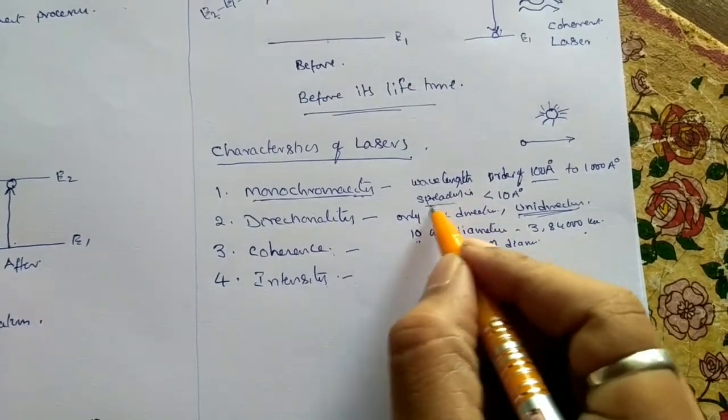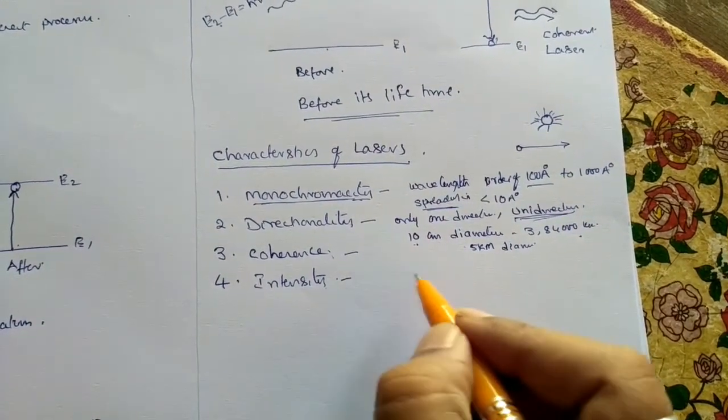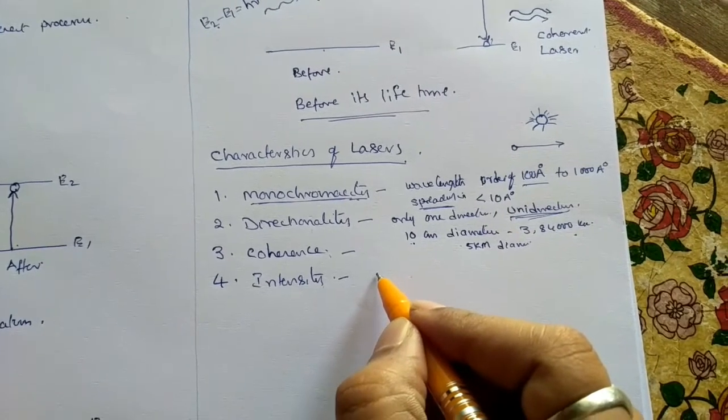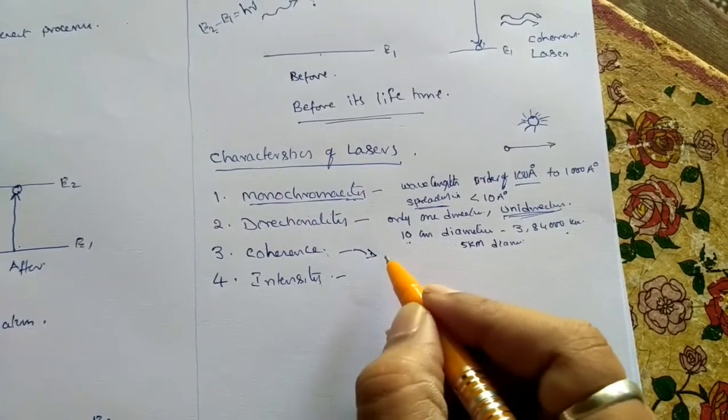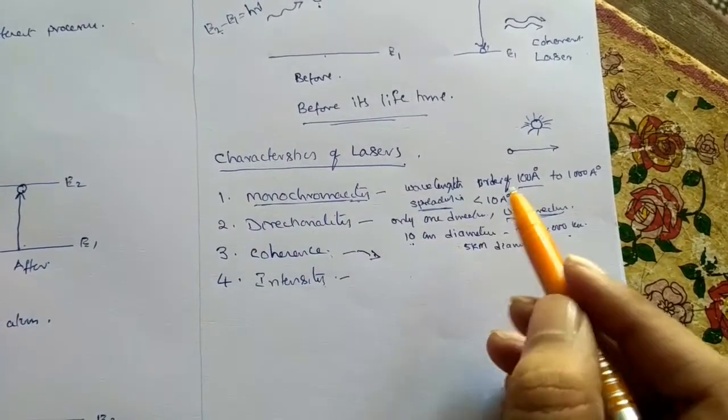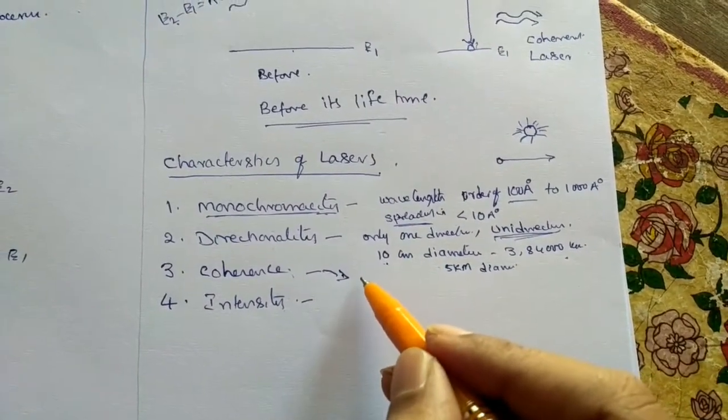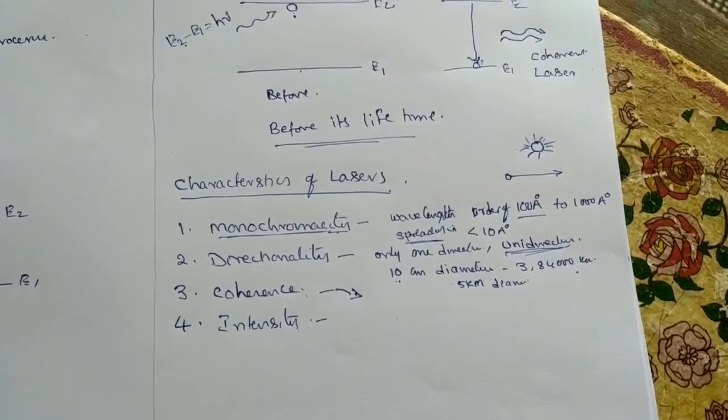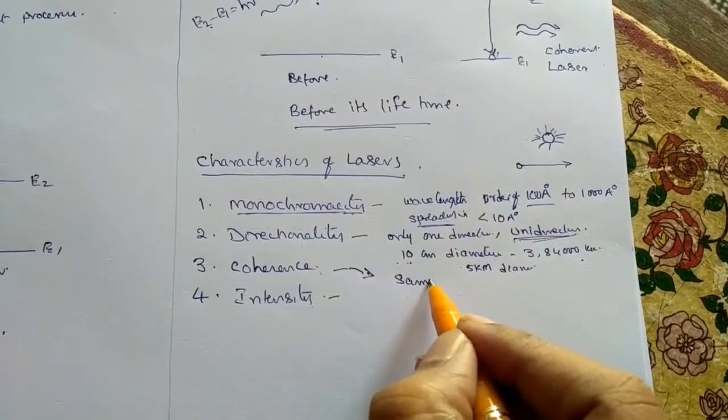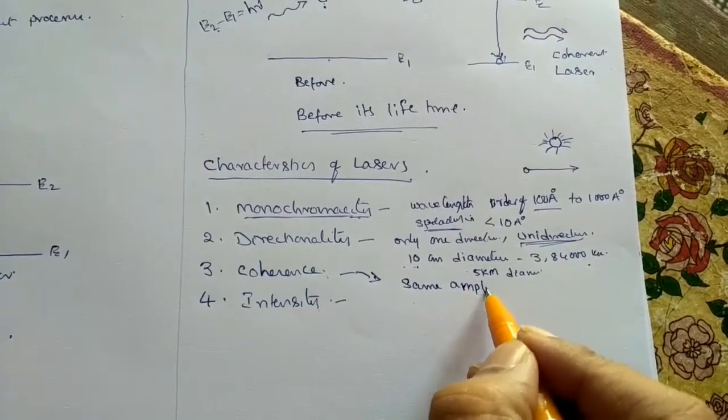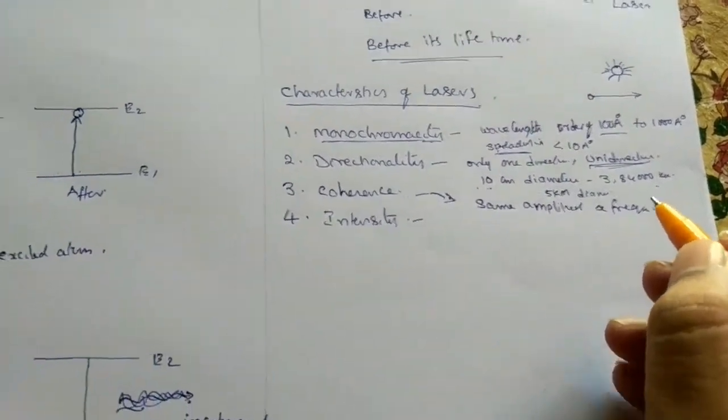Next one is coherence. Coherence means, as I already told you, monochromaticity is one type of coherence. Coherence means all the waves, all the group of waves, are vibrating with same amplitude and frequency. That is called coherence.